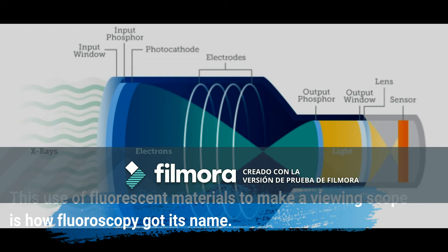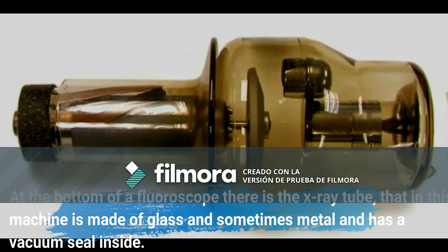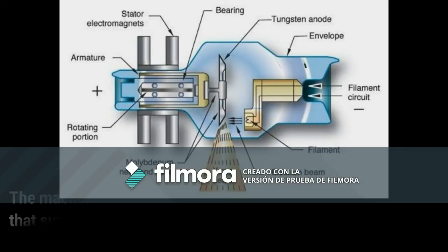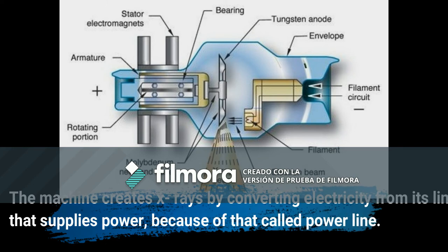This use of fluorescent materials to make a viewing scope is how fluoroscopy got its name. At the bottom of a fluoroscope there is the x-ray tube, which in this machine is made of glass and sometimes metal, and has a vacuum seal inside. The machine creates x-rays by converting electricity from its power line, which supplies power.